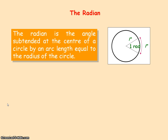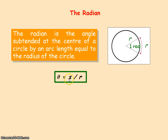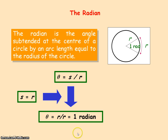The definition of the radian is the angle subtended at the centre of a circle by an arc length equal to the radius of the circle. So the angle subtended is the arc angle, which we know equals the arc length — that is, our distance travelled — divided by the radius. So for the angle theta to equal 1 radian, then s must equal r.